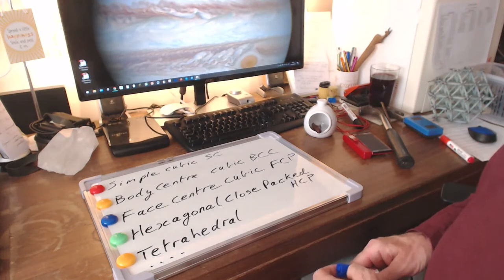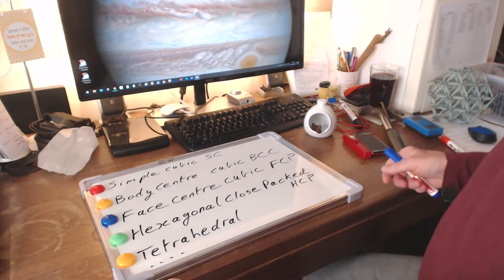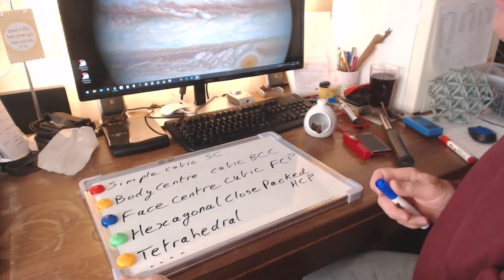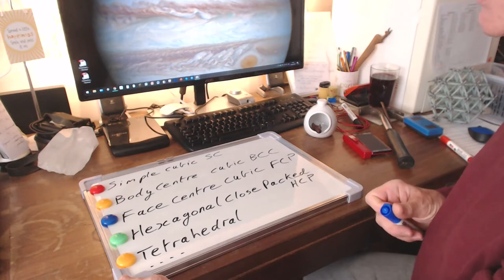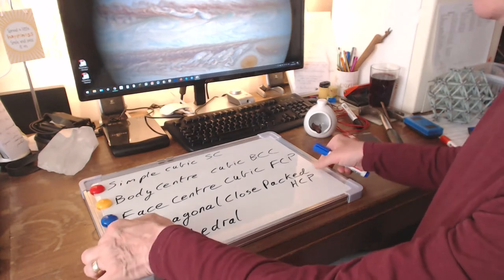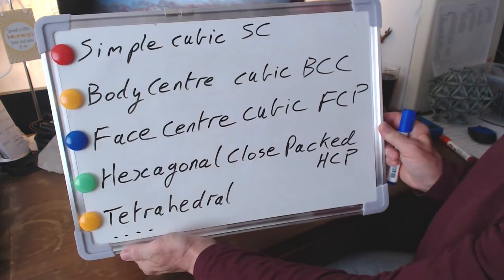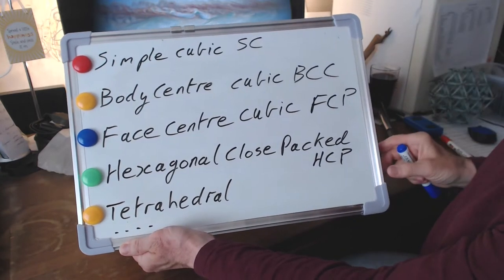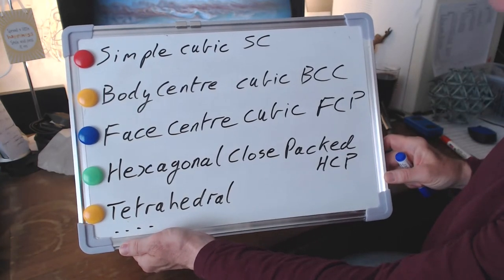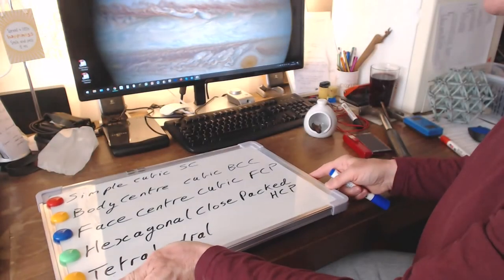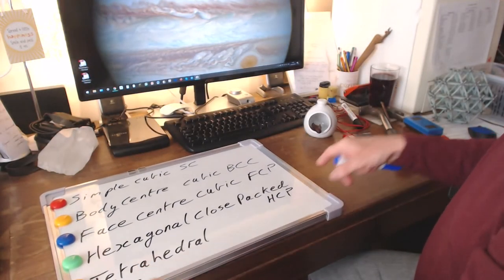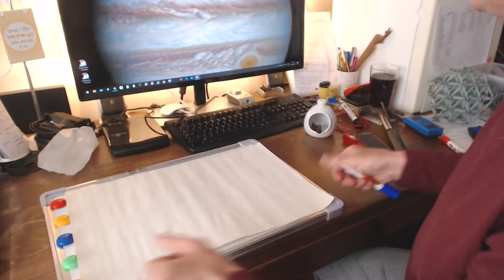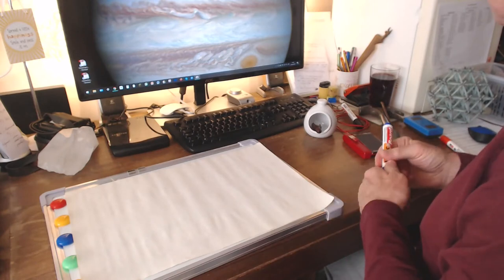There are many different crystal structures and variations on them in the real world, but in our house, we can perhaps simplify it and focus down onto a few principal types. So the first of these I'd like to look at is simple cubic, commonly shorthanded as just SC. And the classic example of a simple cubic crystal structure is actually salt, common household salt.